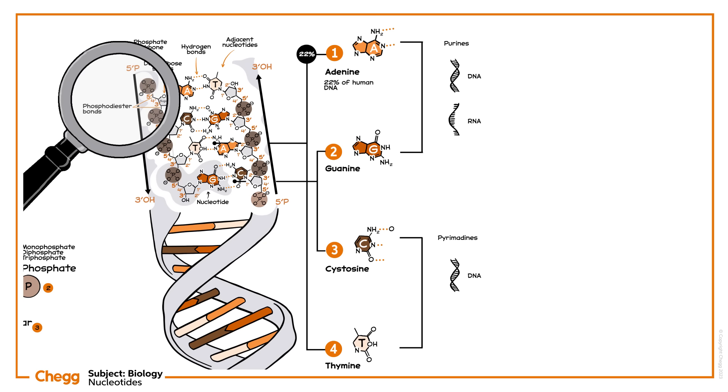22% of human DNA nucleotides contain adenine, and so an equivalent 22% contain its complementary base, thymine. 28% contain cytosine, so another 28% contains its complementary base, guanine.